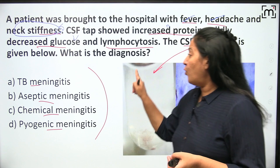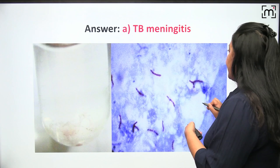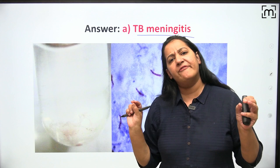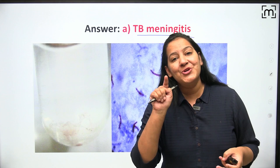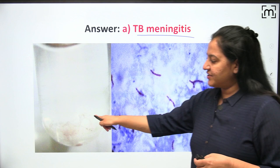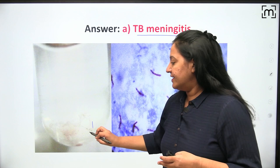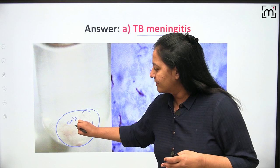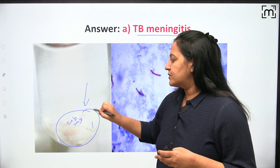The correct answer here is tubercular meningitis. I will be discussing all types of meningitis, and then we'll look at the question again. In the gross image, you can see a test tube filled with CSF showing a cobweb appearance. This appearance is due to fibrin — it is a typical cobweb appearance.